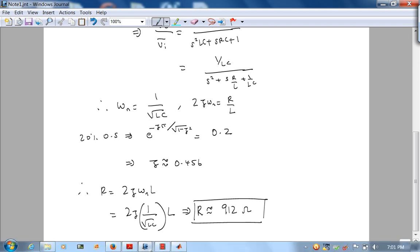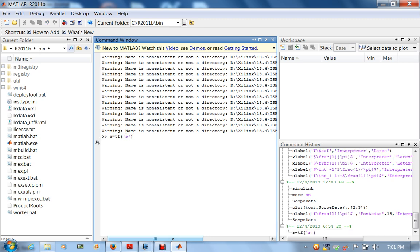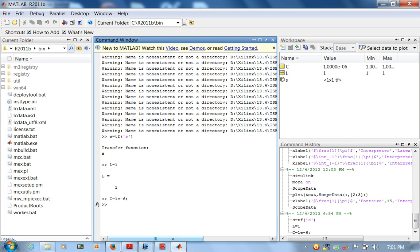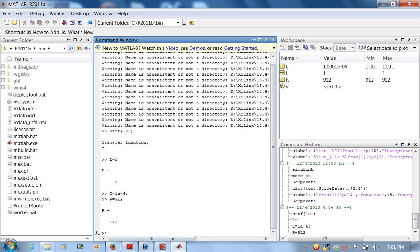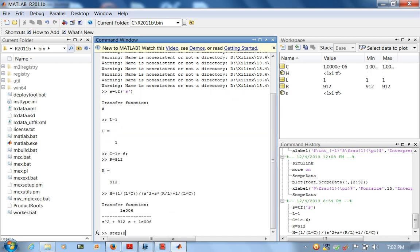Now, let's check our answer in MATLAB. I've already fired up MATLAB. So if I define S as our transfer function object, let me say L is 1 henry, C is 1 microfarad, and R I found as 912 ohms. So now our transfer function H is 1 over L times C, divided by S squared, plus S times R over L, plus 1 over L times C. Let's just step this guy.